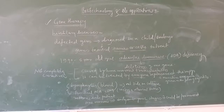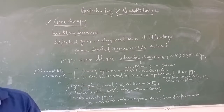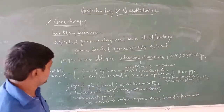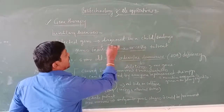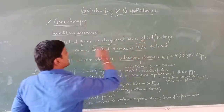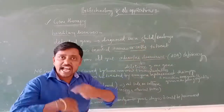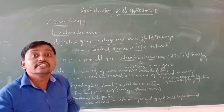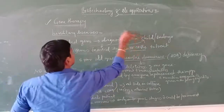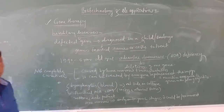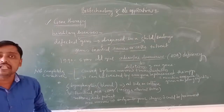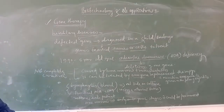The correction of a genetic defect involves delivery of a normal gene into the individual or embryo to take over the functions of the defective gene. When a normal gene is added into a child or embryo, that gene overtakes the defective gene and corrects the genetic makeup.